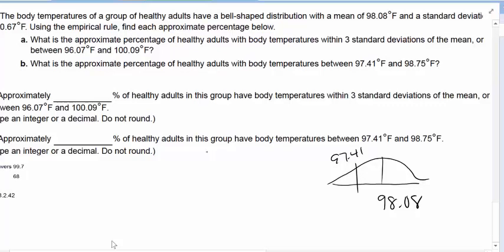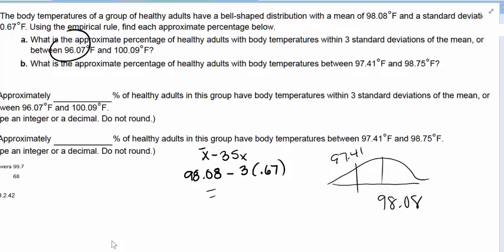Let's take the mean minus three standard deviations, which would be 98.08 minus three times 0.67, and what are we going to get? 98.08 minus 3 times 0.67, we got 96.07. So they kind of already told you.